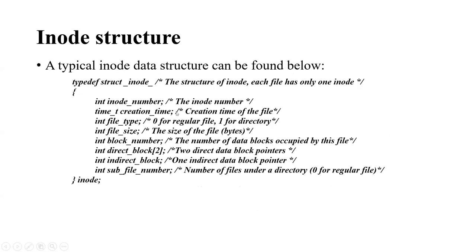These slides show the basic data structure of the inode, which will also be used in our SFS. There are several parameters. First, the inode number, which is the index of this inode — once you have an inode number you can use it to retrieve the inode from the hard disk. The second parameter is the creation time, which is automatically set when you create a file. In our simple file system you don't need to create any file, so this information is not important.